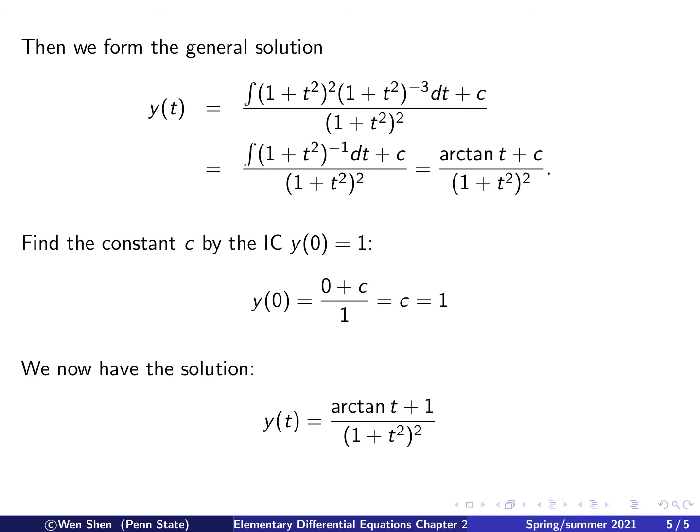Finally, since the initial condition is given, we will need to find the constant c in the general solution by using the initial condition, y(0) equals 1. Let's compute y(0). Setting t to be 0, we have arctan of 0, which is 0, plus c. If t is 0, the denominator is 1, so this simply equals c. The initial condition says c must be 1.